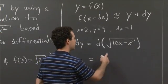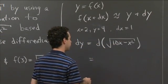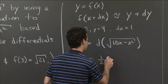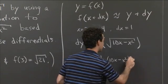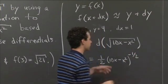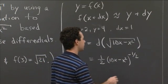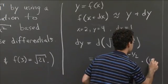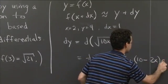This is d(√(10x - x²)). The outermost function is the square root function. So this is going to be ½(10x - x²)^(-½). That's 1 over the square root of 10x - x². Now I need to multiply by the derivative of the inside function, which is (10 - 2x)dx.